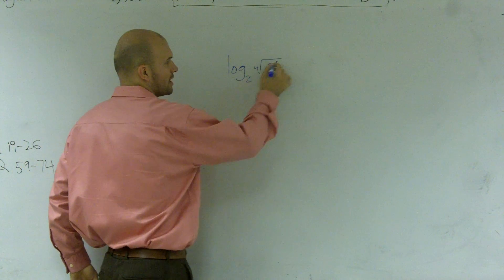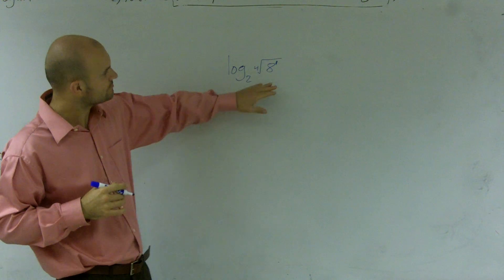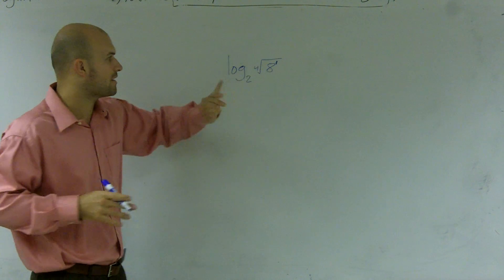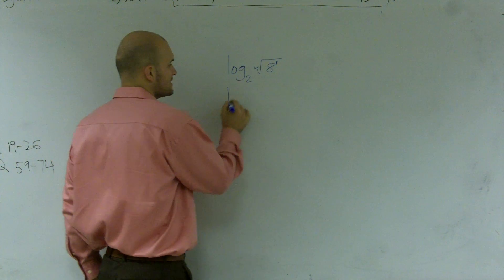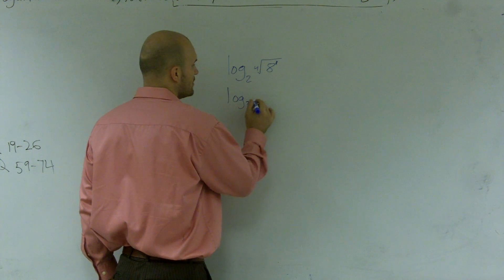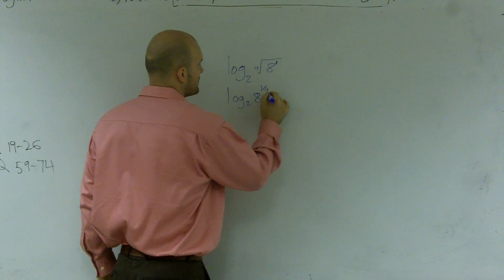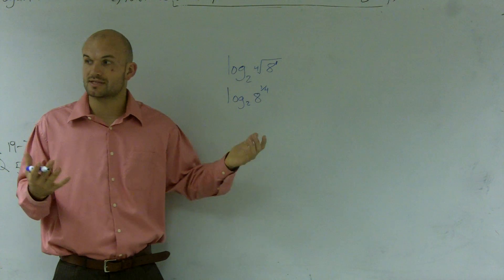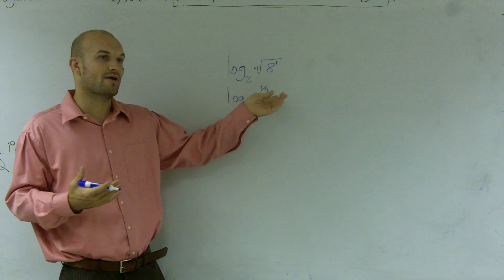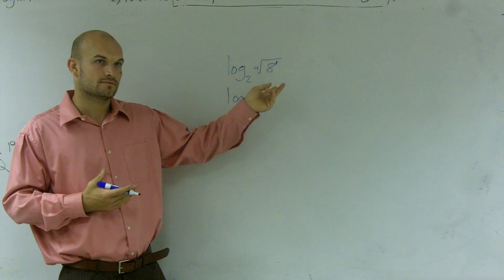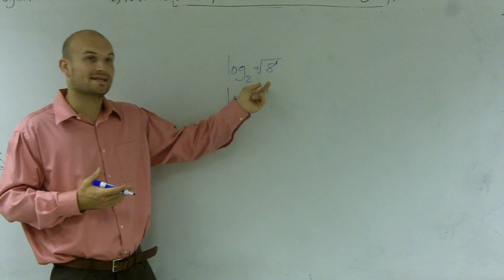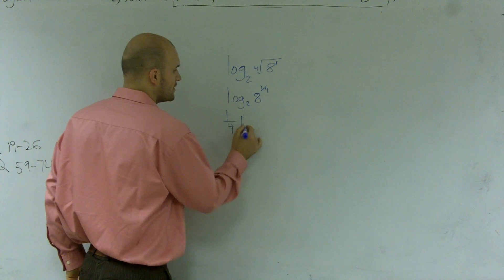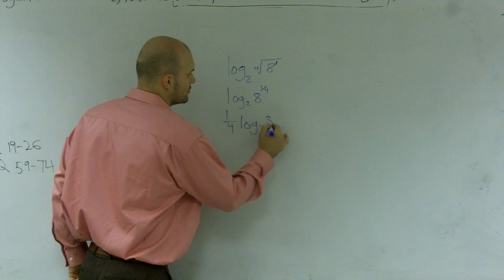Remember, I can put an exponent up here inside my radical, and that's going to be 8 to the first power. Then what I can do is I can rewrite this as log base 2 of 8 to the 1/4th power. The reason why we always like using exponents when dealing with logarithms is because that property of logarithms states that whenever I have an exponent, I can take that exponent and put it in front. So now I can rewrite this as 1/4 log base 2 of 8.